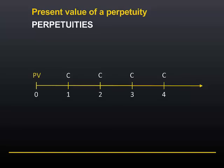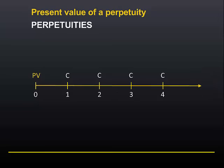Just to make the diagrams a bit easier to follow, we'll just show the first few cash flows of the perpetuity. Now it doesn't make any sense to talk about the future value of a perpetuity — this would be an infinitely large number, infinitely far into the future. However, it is possible to calculate the present value of an infinite stream of cash flows. The reason for that is that as those cash flows move further and further into the future, they are discounted more and more, and the present value of a far distant cash flow approaches zero.